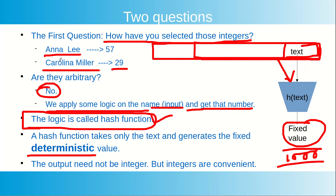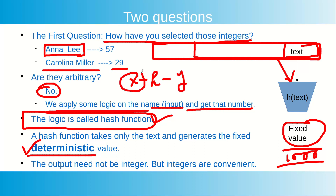For example, if we apply some logic as the hash function, Anna Lee will always map to 57 and Carolina Miller will always map to 29. It is not the case that today Carolina Miller hashes to 29 and tomorrow it gives something other than 29. That is not going to happen. The important thing to remember is that it is a deterministic one: if the input is x and hash(x) gives y, then always whenever I take x, it is going to give me y.